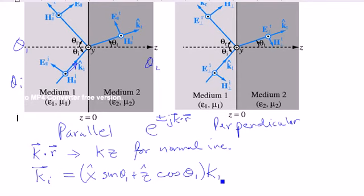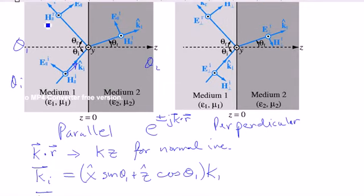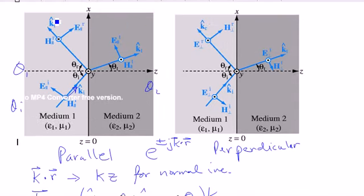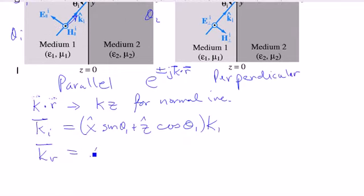For the reflected wave, pretty much everything is going to look the same, but you'll notice that it now goes in the negative z direction and the positive x direction. So this will be x sine theta 1 minus z cosine theta 1. And again, essentially the same numbers, cosine theta 1, sine theta 1. We're still in the same region, and therefore it's going to look the same.